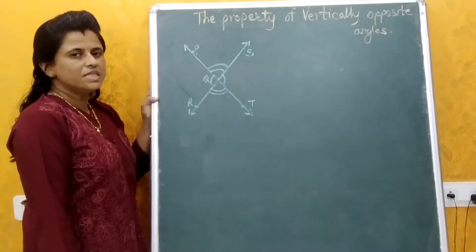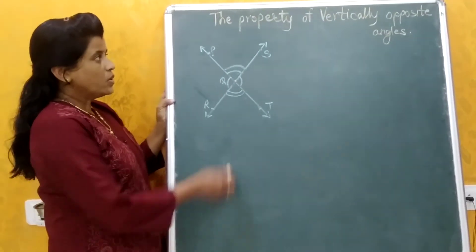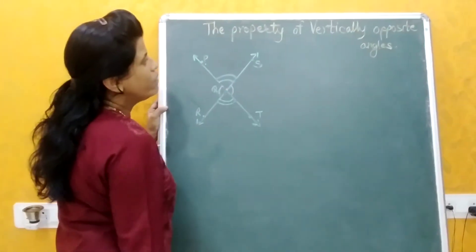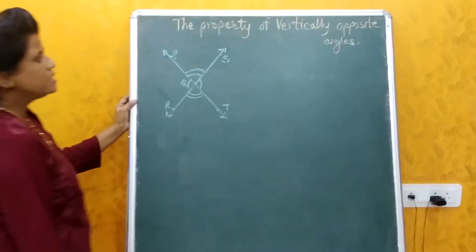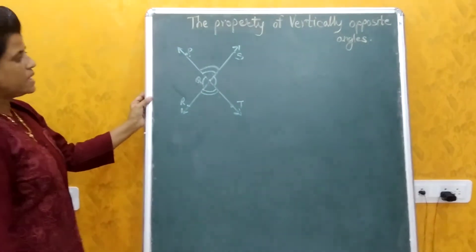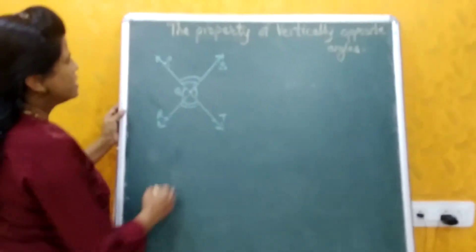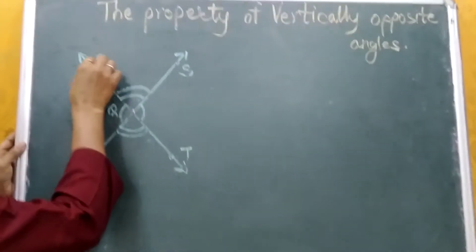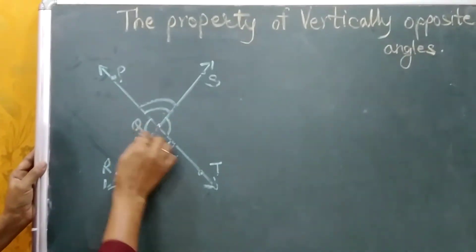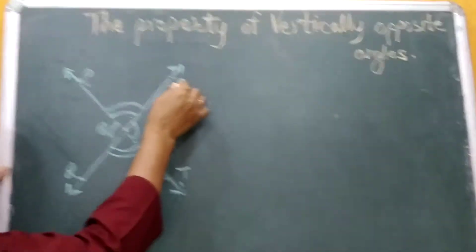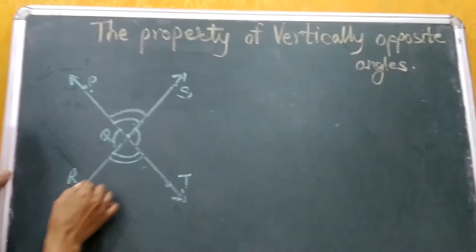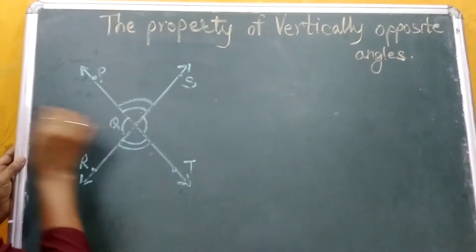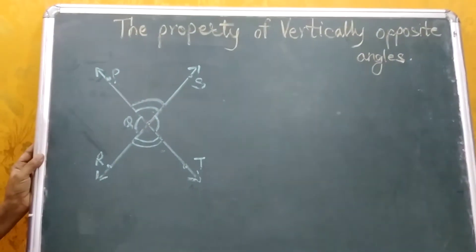Hi friends, today we are going to see the property of vertically opposite angles from standard. See here, line PQT and line SQR intersect each other at point Q.